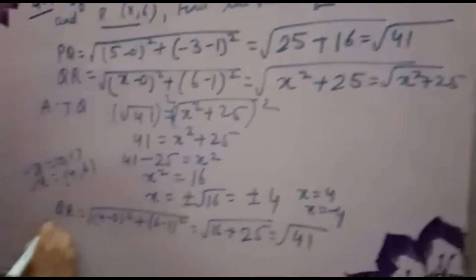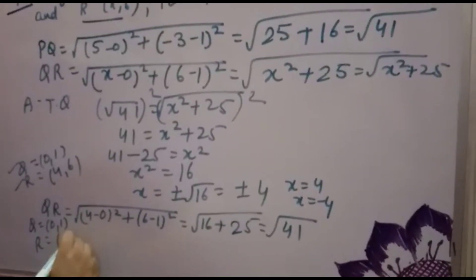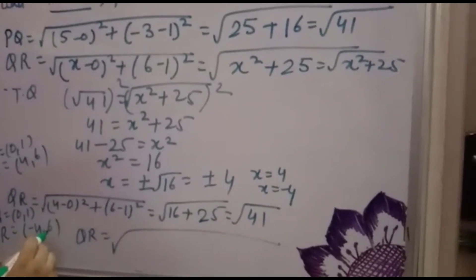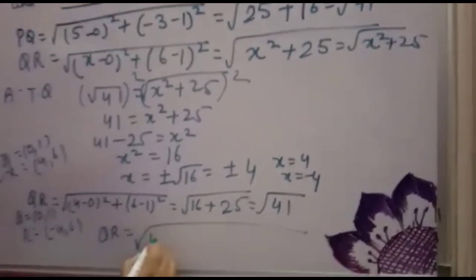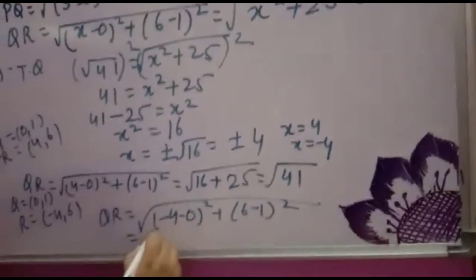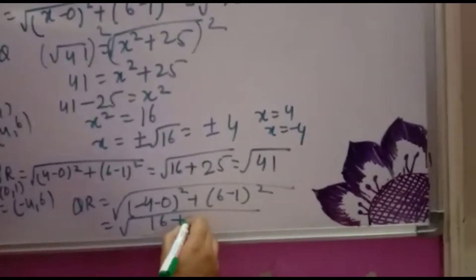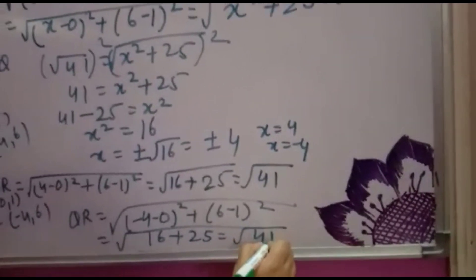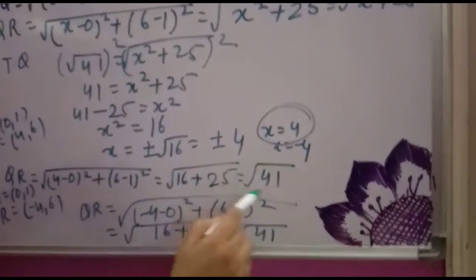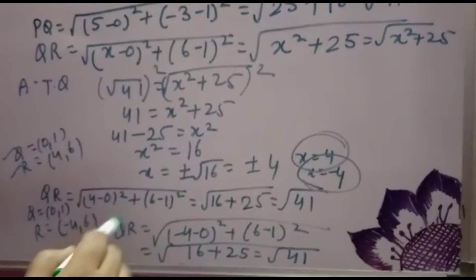Now taking Q = (0, 1) and R = (−4, 6) for the second case where X = −4. You get QR = √((−4−0)² + (6−1)²) = √(16 + 25) = √41. So whether X is 4 or −4, QR = √41.